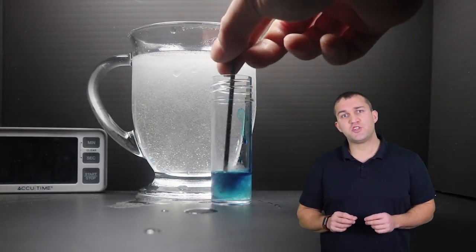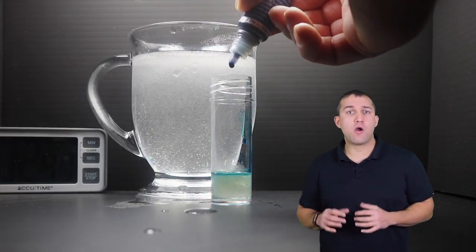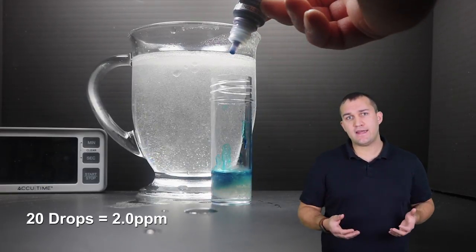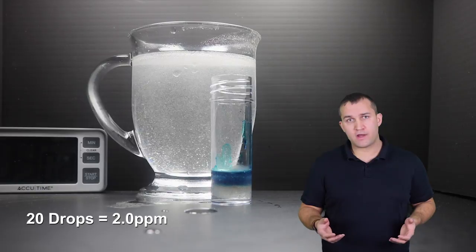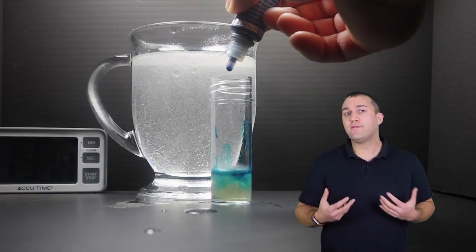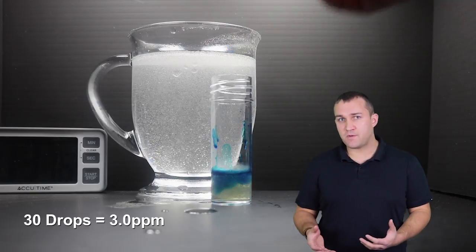Each one of these blue drops represents 0.1 parts per million of H2. Leading ionizers and hydrogen machines on the market make about 0.1 parts per million of hydrogen. If they're a great model, maybe one part per million.